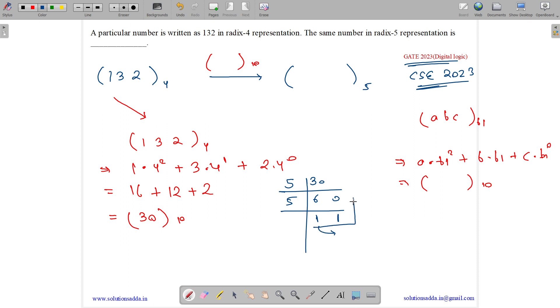So its value is read from bottom to top. The answer is 110 base-5. You can also cross-verify it by converting it to base-10.